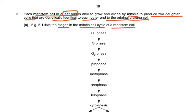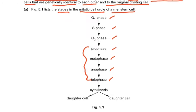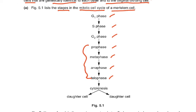The stages listed start with G1 phase, S phase, G2 phase, then prophase, metaphase, anaphase, and telophase — this part is actually mitosis — but of course the whole thing is called the mitotic cell cycle. Then we have cytokinesis, which is not part of mitosis itself, and then it produces the two daughter cells.